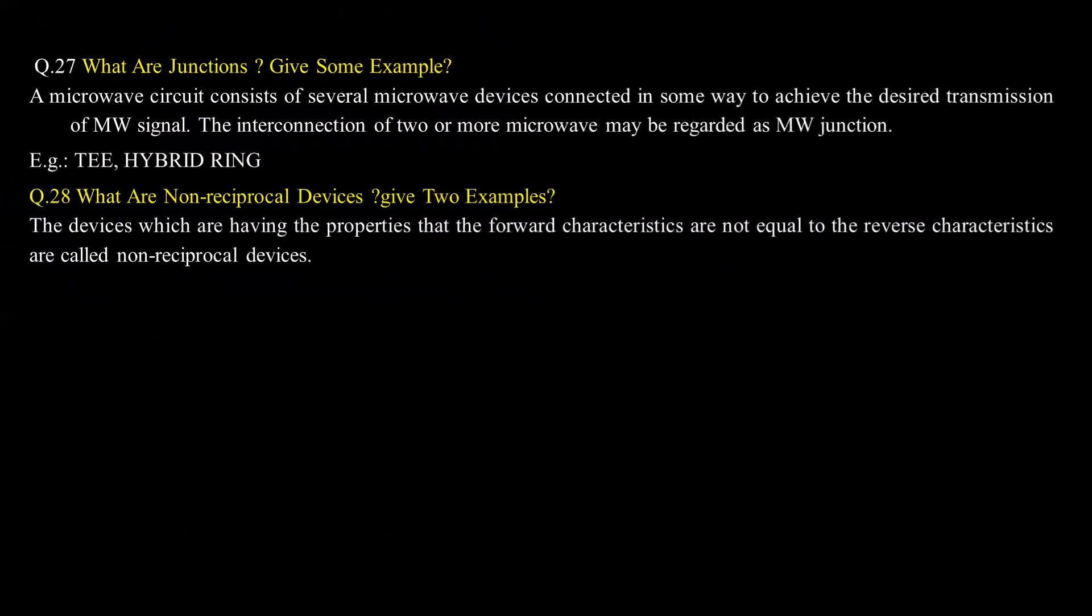What are junctions? Give some examples. A microwave circuit consists of several microwave devices connected in some way to achieve the desired transmission of microwave signals. The interconnection of two or more microwave devices may be regarded as microwave junction. Examples include T-junction and hybrid ring.